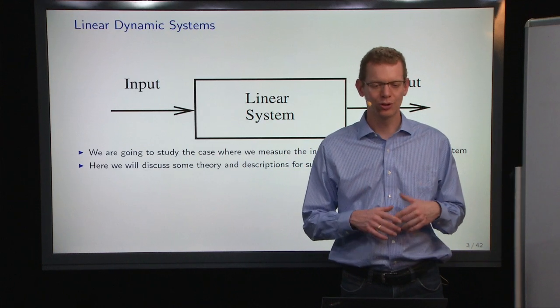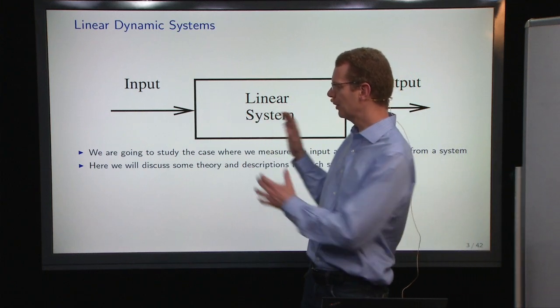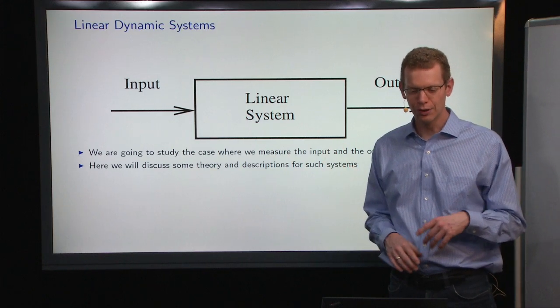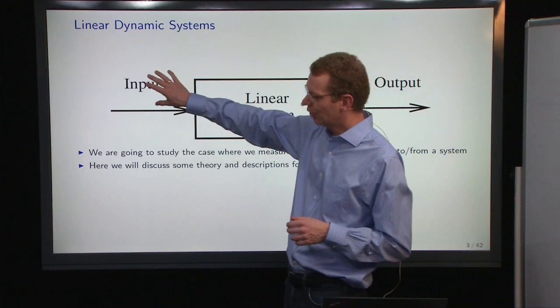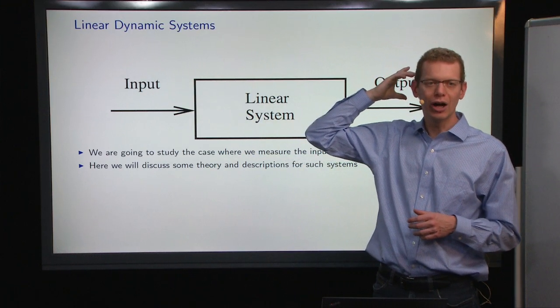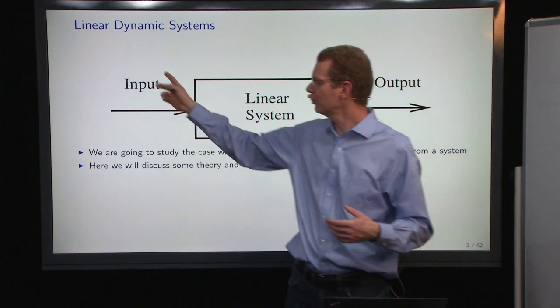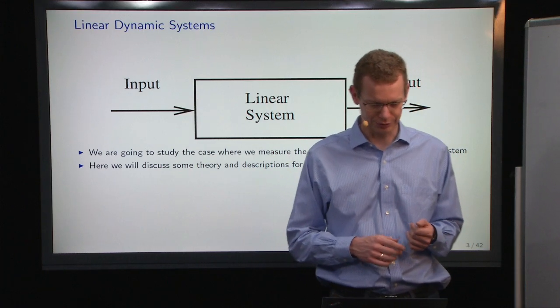But let's first look at what defines a linear system. So we have some input, then we have the system, and then we get an output. We're going to study the case where we know the input and we know the output, whereas in much of the previous things we've done, we said the input is some kind of white noise signal. Now we'll assume that we know what happens.